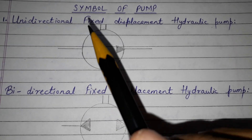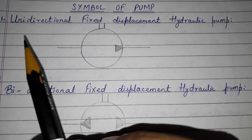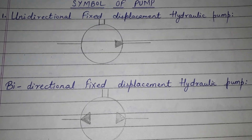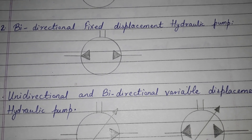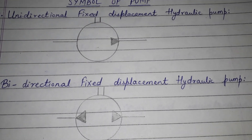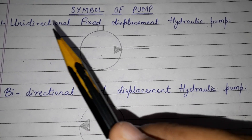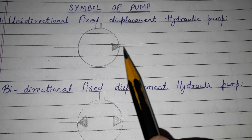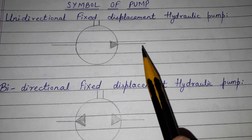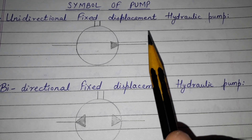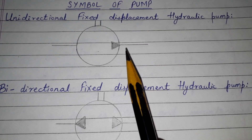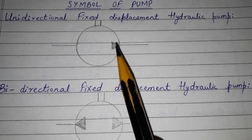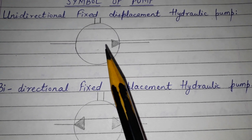We are now looking at the symbols of pumps. Let's start with the unidirectional fixed displacement pump, which means the flow is in one direction and fixed displacement means fixed discharge. This is a hydraulic pump where the flow is in one direction and the displacement is fixed.